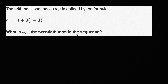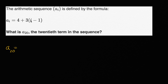A sub 20 is the 20th term in the sequence. I encourage you to pause the video and figure out what is the 20th term. We can just think about it like this — a sub 20, we just use this definition of the i-th term. Everywhere we see an i, we put a 20 in. So it's going to be four plus three times 20 minus one.